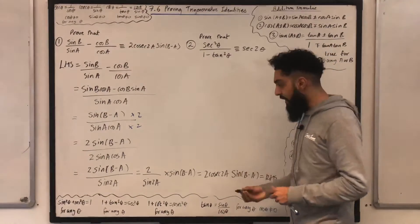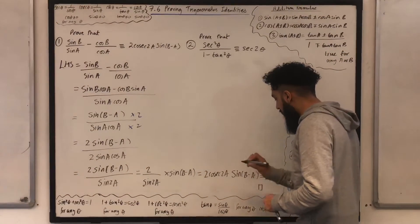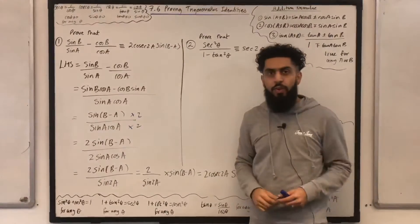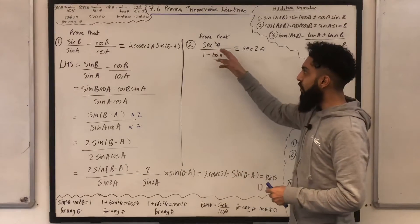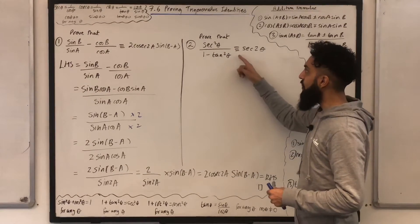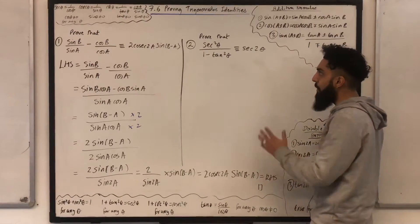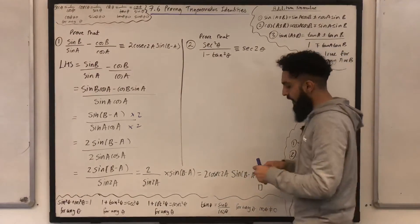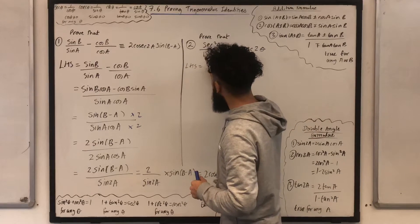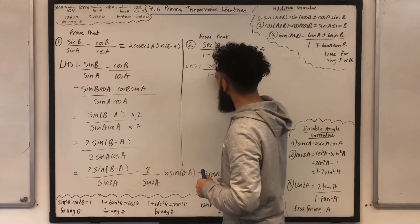I can finish off the question by drawing a little box, which means end of proof. Let's have a look at question 2 now. It says prove that sec squared theta all over 1 minus tan squared theta is identical to sec 2 theta. For this particular proof, I'm going to start off from the left-hand side. LHS equals sec squared theta all over 1 minus tan squared theta.